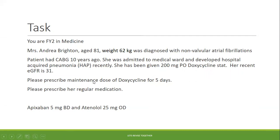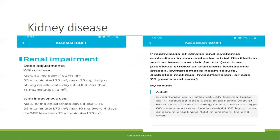You can check creatinine clearance based on the weight and other parameters — it will come around 30 to 35. So we will go with the lower dose. Apixaban dose needs to be changed from 5 mg to 2.5 mg BD. Atenolol will stay the same. For doxycycline, if you don't know the maintenance dose, open the BNF, go to the index, find doxycycline under D, check the dose, and write down the correct dose.